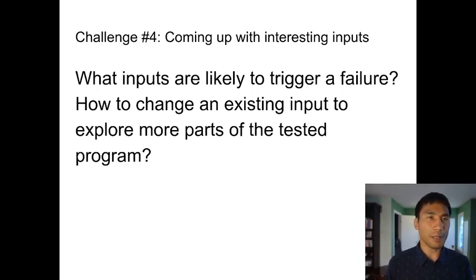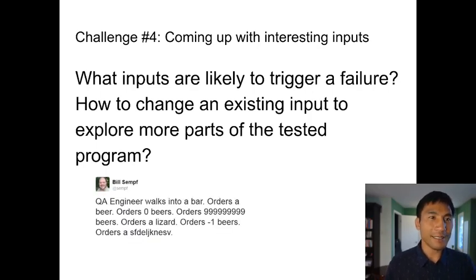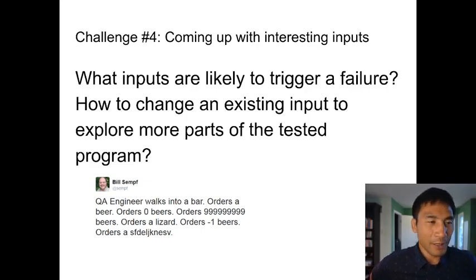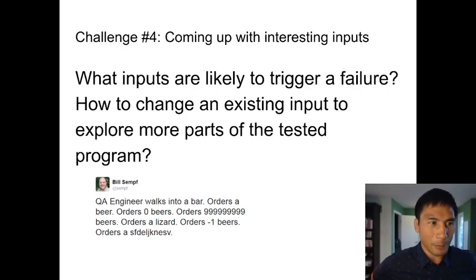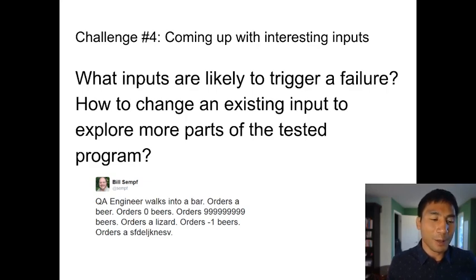Coming up with interesting inputs: what inputs are likely to trigger a failure? You can execute on successful inputs all the time — that's not telling you very much. So how do you change an existing input to explore more parts of the tested program? A QA engineer walks into a bar, orders one beer, orders zero beers, orders 999,999,999 beers, orders a lizard, orders minus one beers, orders a null character. You want to explore the input space in some sort of reasonably comprehensive way — making sure you explore at least interesting parts of the input space.